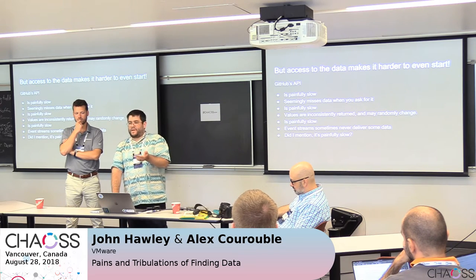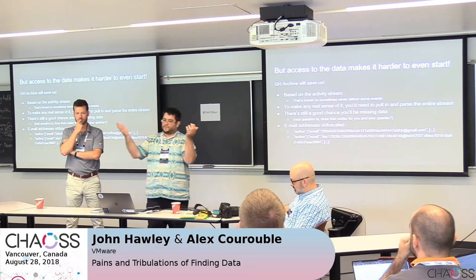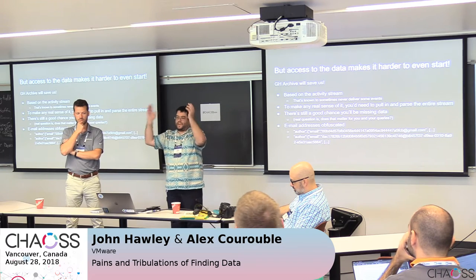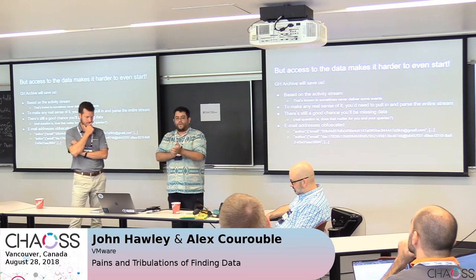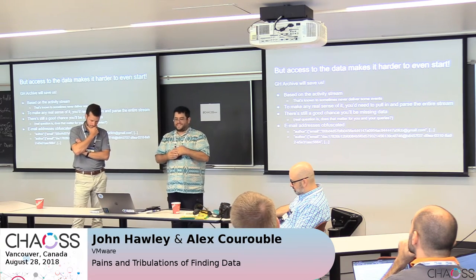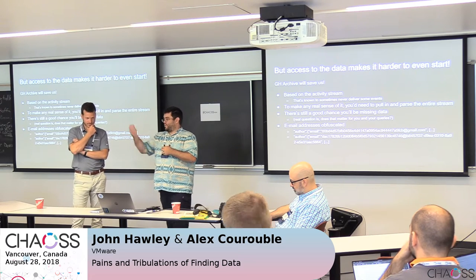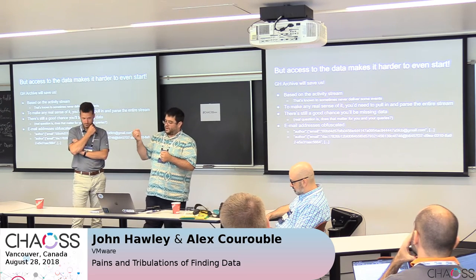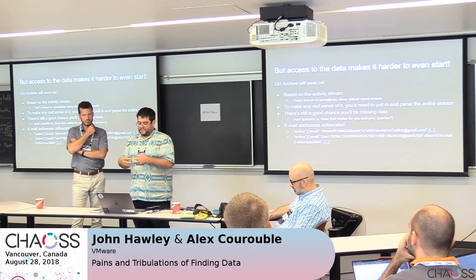So GitHub is a pain. Let's look at what else is out there. There's GH Archive — this is beautiful and wonderful, it has all of this data hypothetically already pulled for you. Except that it doesn't. It's based on the activity stream, which we already know sometimes has missing event data.